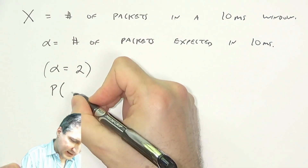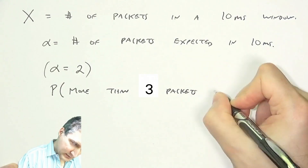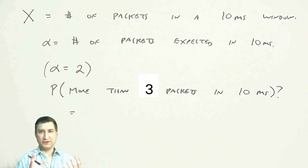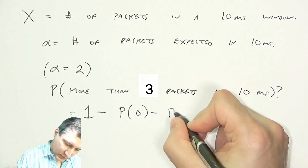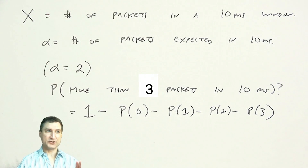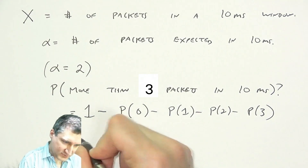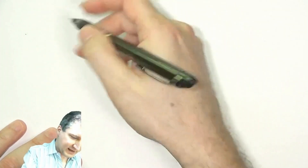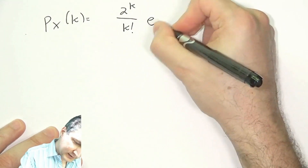I could ask: what's the probability that I got more than three packets in 10 milliseconds? Well, I could have 50 packets or 100 packets, so the easiest way to look at this is: I have the probability of zero, one, two, and three, and I subtract that from one. This is the trick of taking an infinite number of possibilities and reducing it to one minus a finite number of possibilities. Now I would use the PMF to compute these probabilities. With alpha equal to two, my PMF is two to the k over k factorial times e to the minus two.